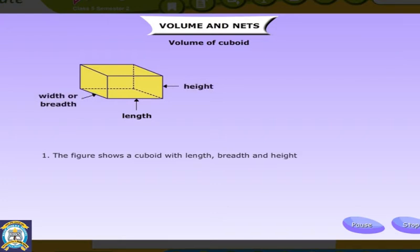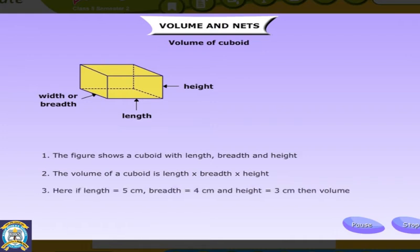See the diagram below to understand. The volume of a cuboid is length into breadth into height. Here if length is equal to 5 cm, breadth is equal to 4 cm, and height is equal to 3 cm, then volume is equal to 5 cm into 4 cm into 3 cm. Volume is equal to 60 cm cube.